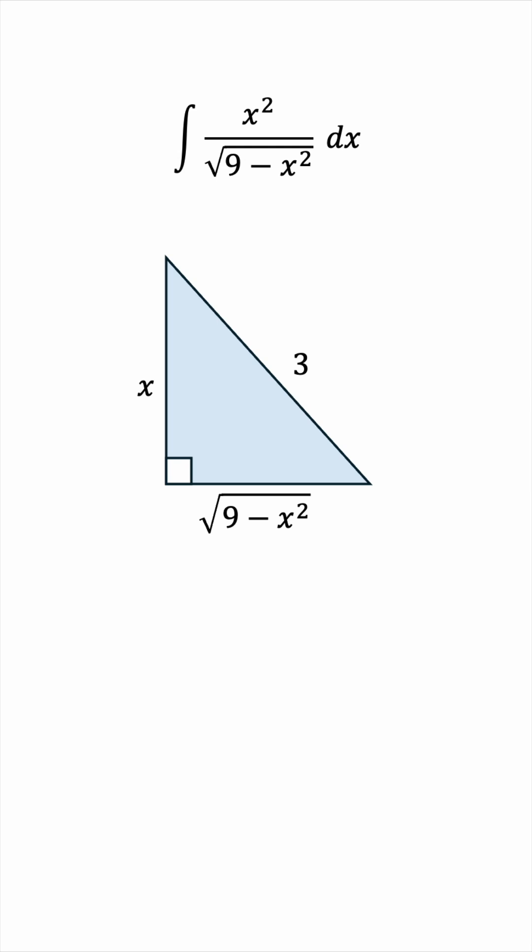Say we introduce an angle theta in this triangle. Then sine theta would be x over 3, and cosine theta would be the square root of 9 minus x squared all over 3.